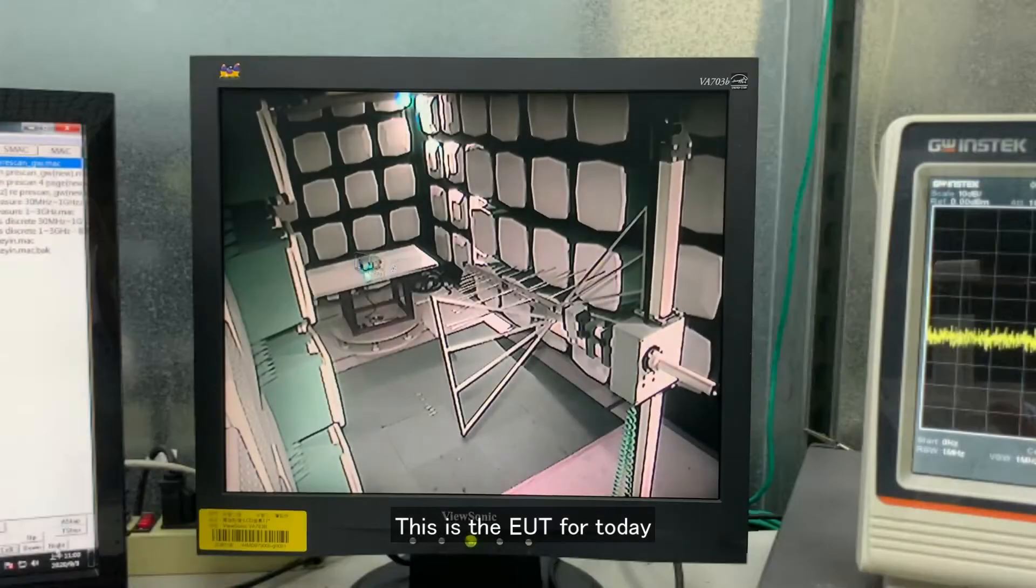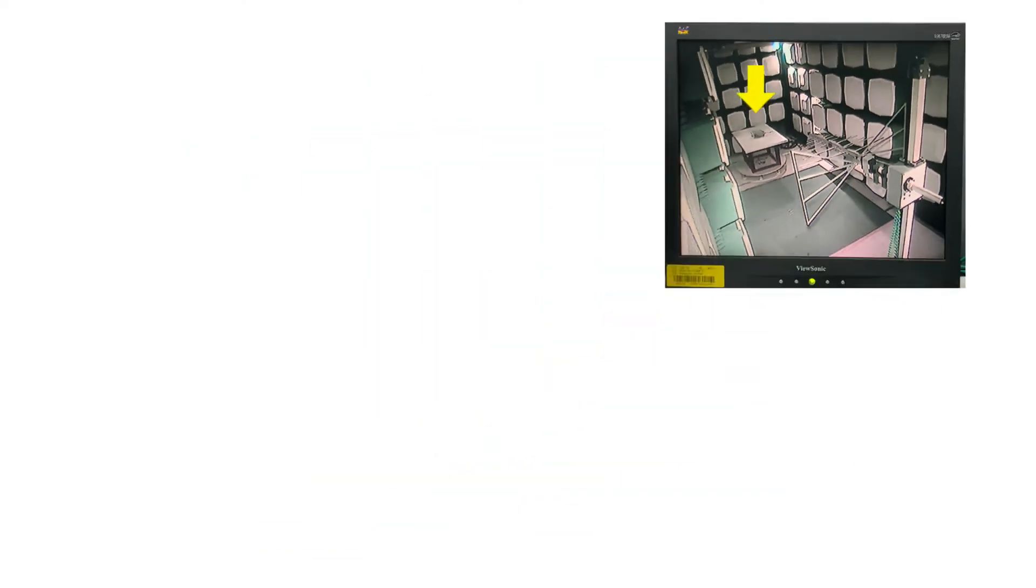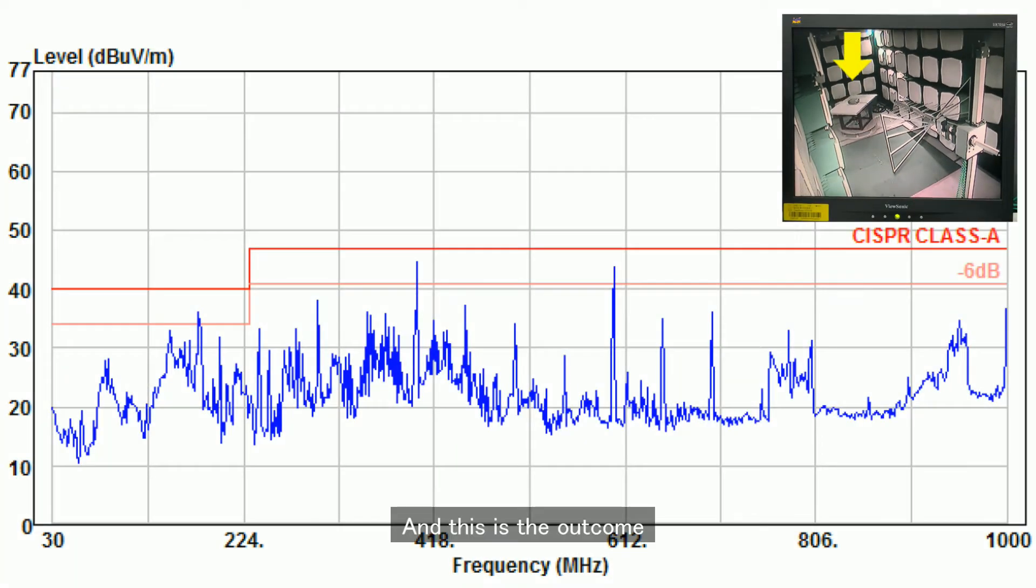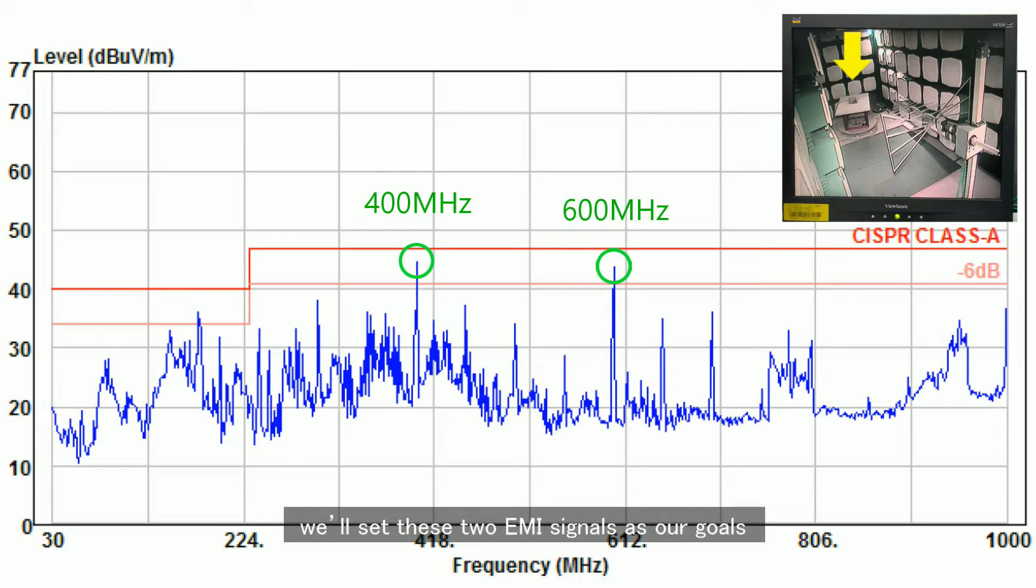This is the EUT for today. We will test it in the EMI chamber. And this is the outcome. These two signals, 400MHz and 600MHz are the strongest ones. So in today's case, we will set these two EMI signals as our goals.